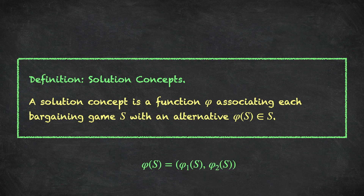A solution concept essentially contains two dimensions: a utility phi-1 of S for player 1 and a utility phi-2 of S for player 2. A very simple example of a solution concept could be the function that simply assigns the disagreement point — the vector of two zeros — to every bargaining problem. That would be a well-defined solution concept.